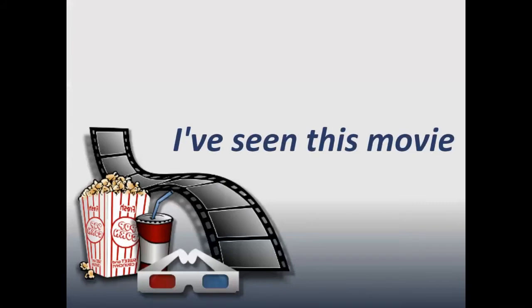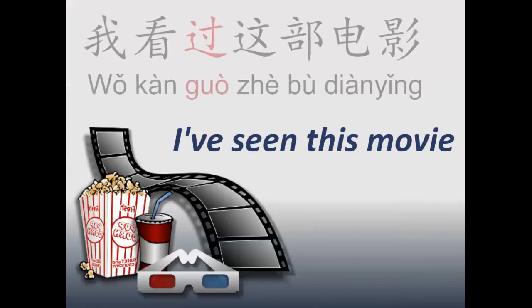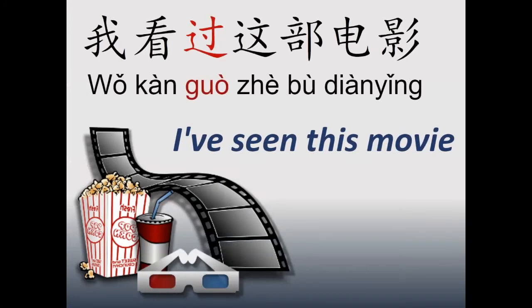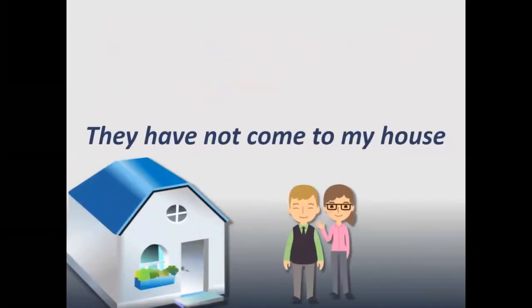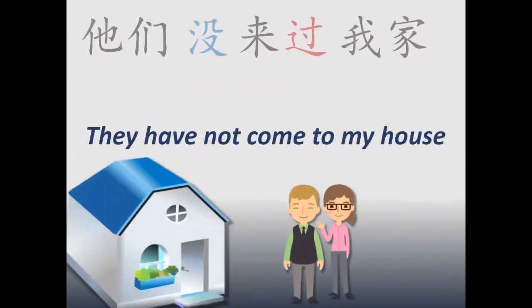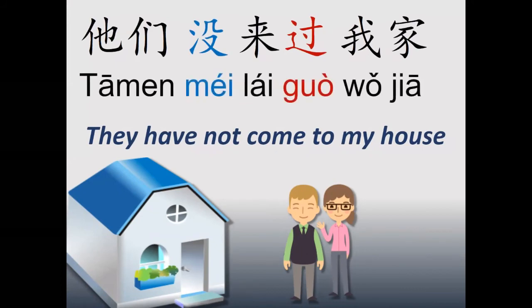Let's practice a little bit with some additional examples. I've seen this movie: 我看过这部电影. Here we have 部, which is the measure word for films and movies. They have not come to my house: 他们没来过我家.